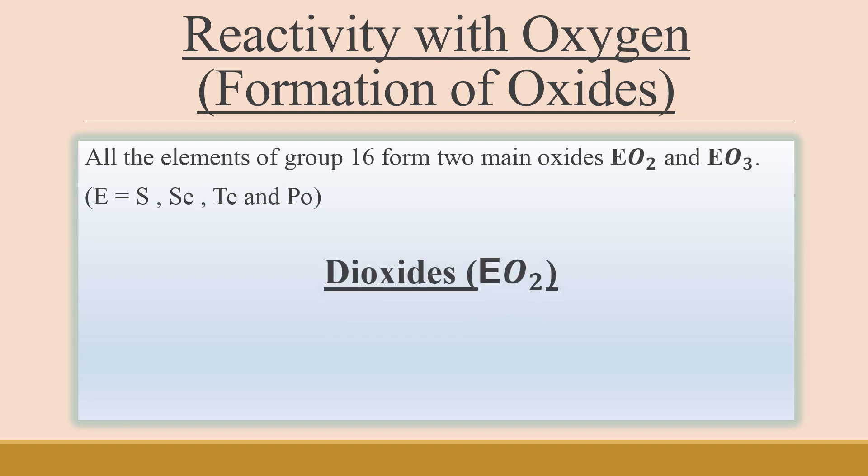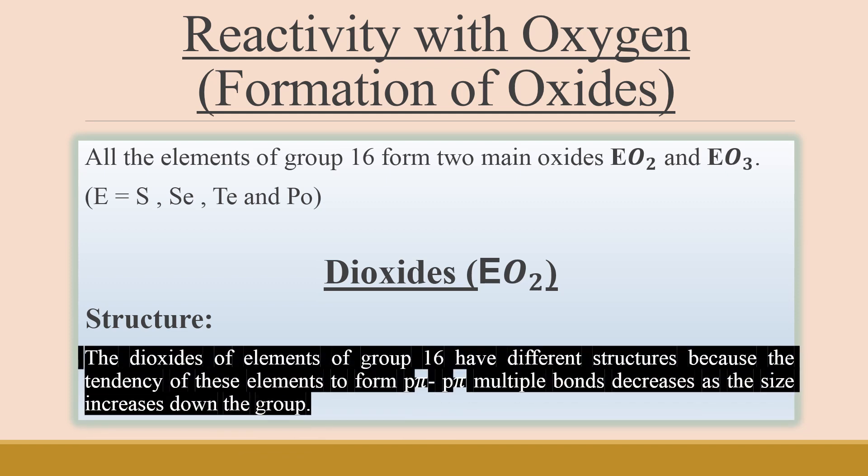First we will discuss dioxides. The dioxides of group 16 elements have the form EO2 and they have different structures because they are formed by p pi–p pi multiple bonds. As you move down the group, the size of the atom increases, and due to the increase in size, the tendency to form p pi–p pi multiple bonds decreases. That is why the dioxides of group 16 have different structures.